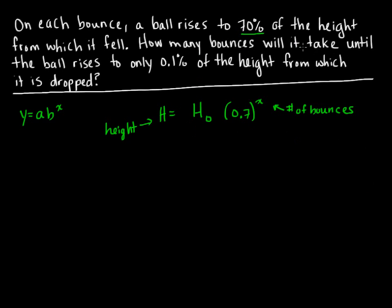Now we want to know how many bounces will it take until the ball rises to 0.1% of the height from which it was dropped. We don't actually know the height it was dropped from, but we do have this notation that represents that initial height. If we want the height to be 0.1% of that, then we're going to replace the H with 0.001, or 0.1% written as a decimal value, times the initial height.